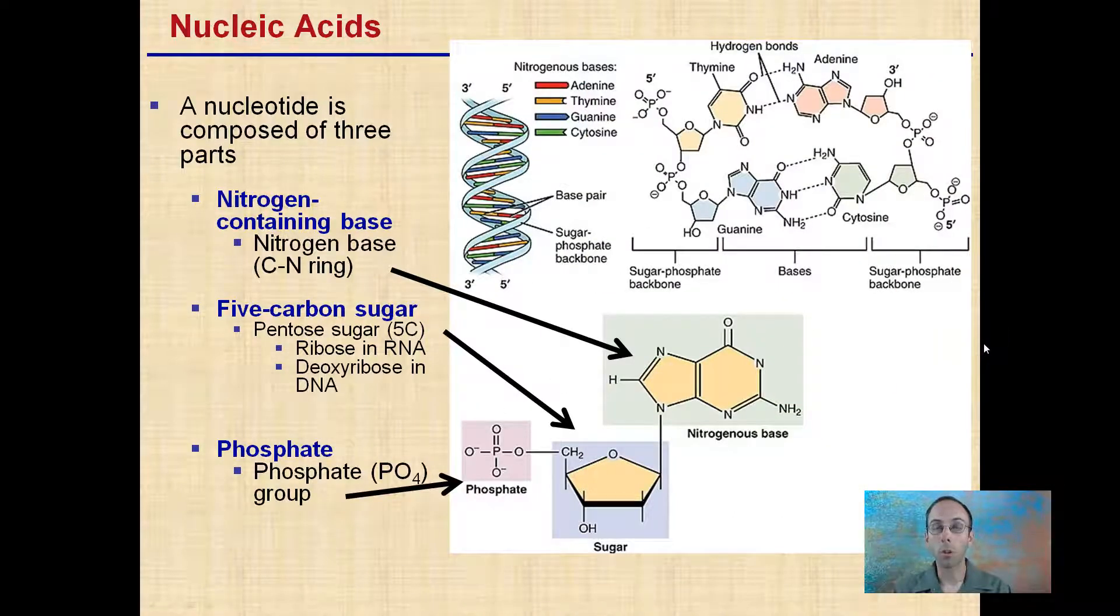So looking specifically, our nucleic acids. A nucleotide is composed of three parts. One is a nitrogenous base, and this is a nitrogen base containing a carbon-nitrogen ring. So we see the nitrogen is located here. Carbon would be located here, here, and here. This indicates a double bond between these two carbons.